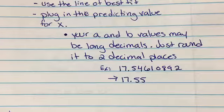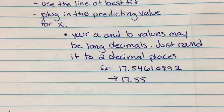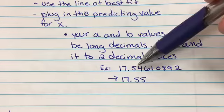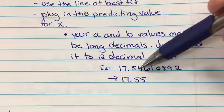Your a and your b values may be long decimals. Just go ahead and round those off to two decimal places. For example, if this was one of my values and I had this big long decimal, round it to the first two decimals.